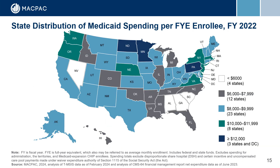The average spending per full-year equivalent enrollee also varies across states, ranging from about $5,200 to $13,000 per enrollee in FY2022. Much of this variation in overall spending per enrollee likely reflects the large variation in spending in the groups for individuals who are over 65 or disabled. Other contributing factors may include variation in provider payment levels and local healthcare markets.